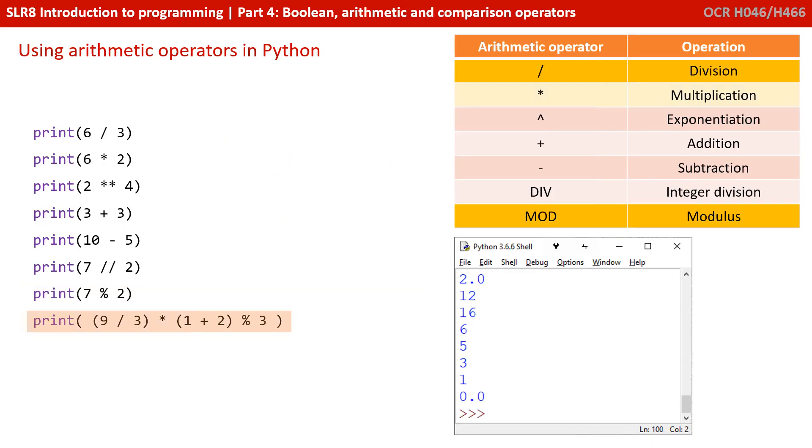Of course, there's nothing stopping you combining different operators and enclosing various sections in brackets just as you would in maths to make bigger compound expressions. Here you can see I have 9 divided by 3 on the left—that would be 3 times by 1 plus 2, which is 3. So I've got 3 times 3, which is 9. And then we're saying 9 modulus 3. In other words, how many whole times does 3 fit into 9? It's 3. And what's left over? What's left over is 0. So the result of this whole expression is 0.